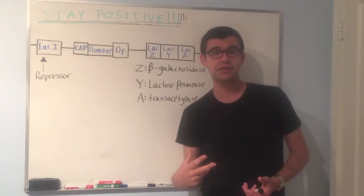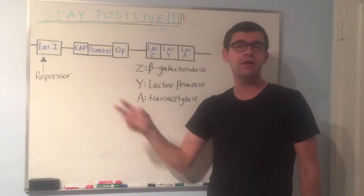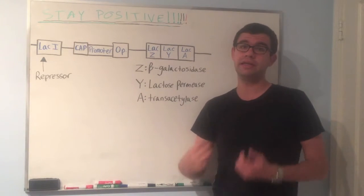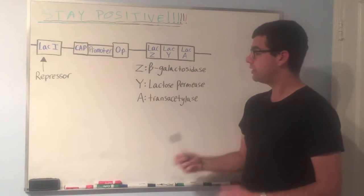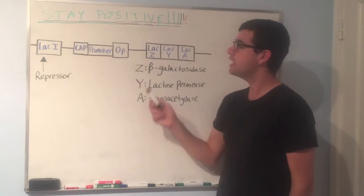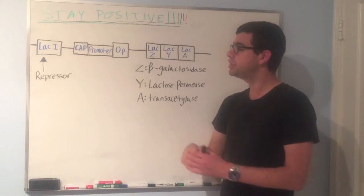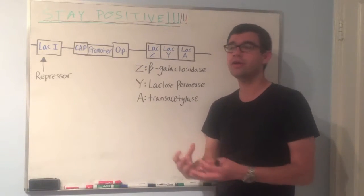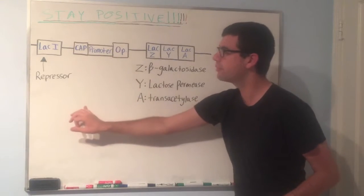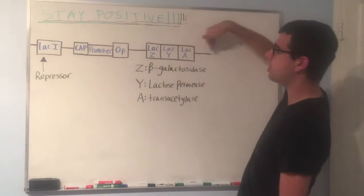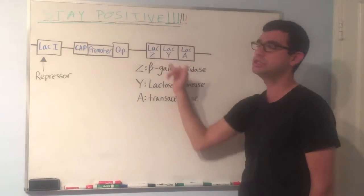So what's the catch? How do you get the repressor off? The only way to get the repressor off is through lactose. So when lactose concentration is high, it will bind to the repressor, which is bound to the operator. It'll change the conformation of the repressor, cause the repressor to leave the operator, and now open the gateway for RNA polymerase to express these genes.